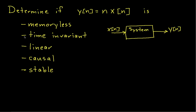The first one is whether or not the system is memoryless. A system is memoryless if the output at time n depends only on the input at time n and not any other times. And you can see that in this case, the output at time n depends only on the input at time n. So this system is indeed memoryless.